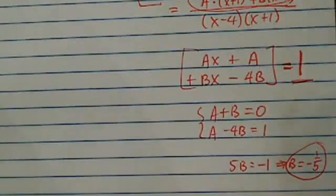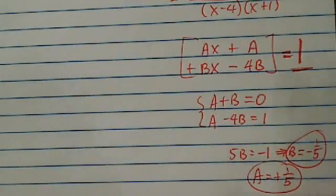I have one of them. And the A is equal to positive 1 over 5. If you have gotten over here, 90% of the work is done.